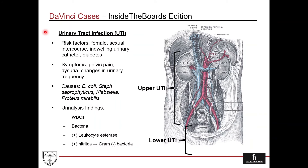Let's briefly talk about UTI. We have a diagram of the urinary system — kidneys, ureter, bladder, and urethra. There's a classification based on anatomy: lower UTI involves the bladder and urethra, and upper UTI involves the ureters and kidney. A urinary tract infection is simply an infection at any point along the urinary tract. Risk factors include being female, sexual intercourse, having an indwelling urinary catheter — which serves as a nidus for infection — and diabetes, because that can affect the immune system.